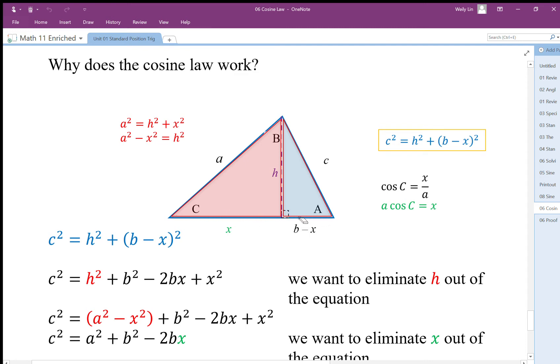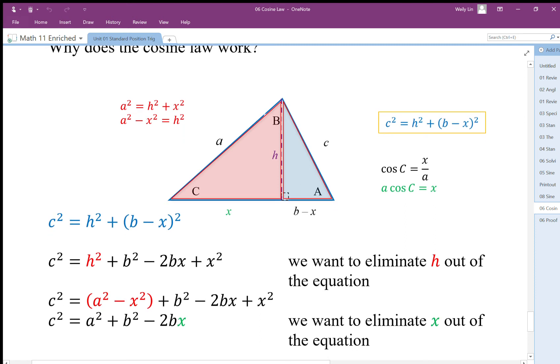We can come up with two Pythagorean relationships here based on the red triangle. So a² equals the height squared plus x².